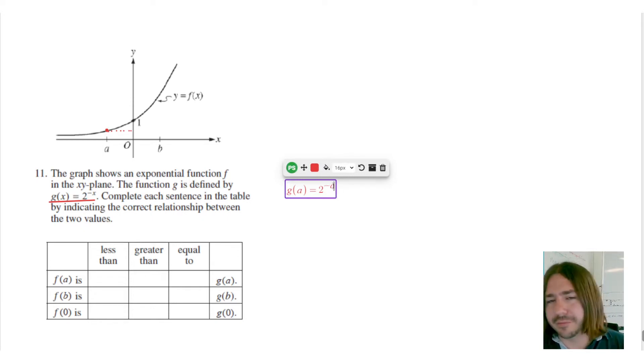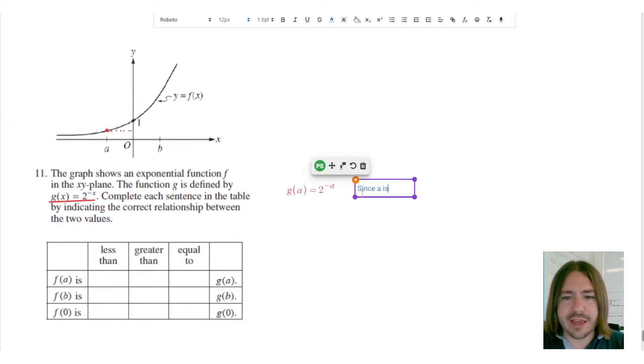So that means this particular number is negative, which means that we have 2 to the power of a positive number. You'd have negative and then negative whatever the number is. Let's just give it a name, like 2, right? So negative negative 2 would be positive 2. And 2 to any power that's a positive power greater than 1 will be greater than 1. Since a is negative, 2 to the power of negative a must be greater than 2.